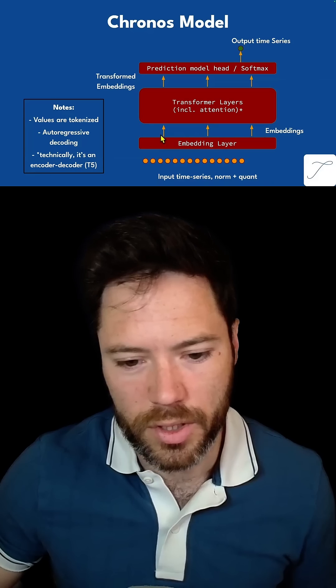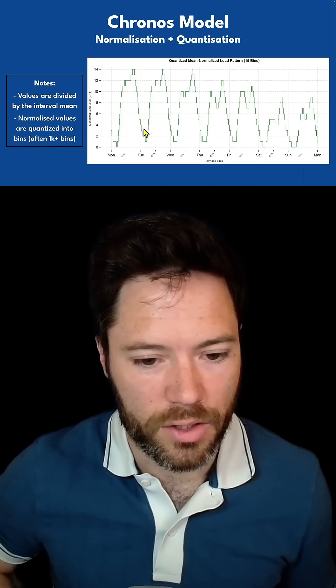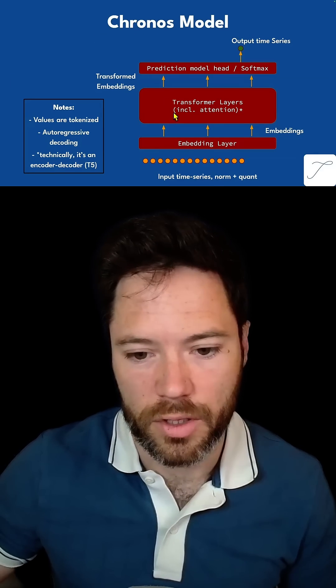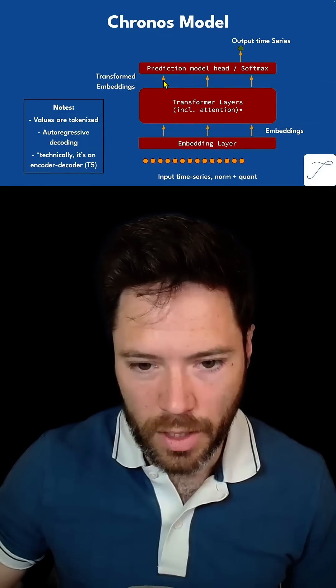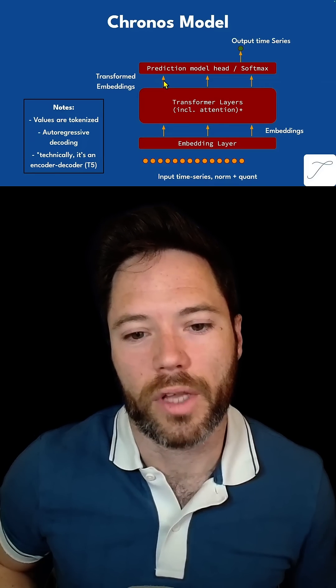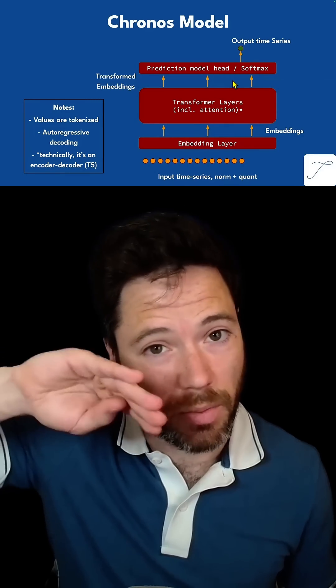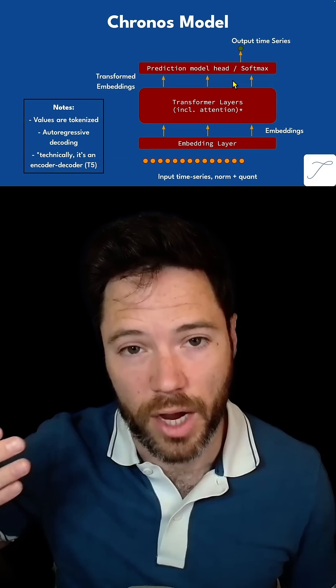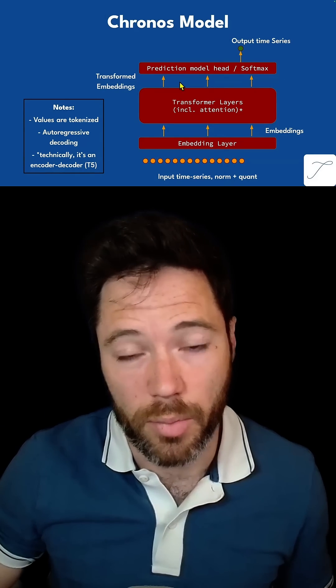Here I've only shown three points, but actually there will be an embedding for each of these tokens. Each of the embeddings will then be converted through the transformer layer into a transformed embedding, and these transformed embeddings will then be subjected to a softmax to give a probability distribution over those buckets or bins.